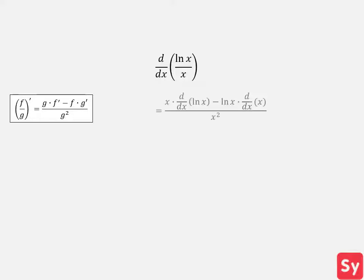Last example, we want to compute the derivative of ln of x over x. Since we want to compute the derivative of a function divided by another function, we can use the quotient rule. We will apply the quotient rule where f equals ln of x and g equals x.